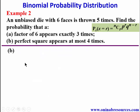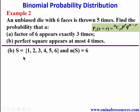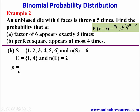For part b, the sample space is still {1, 2, 3, 4, 5, 6}. The perfect squares are {1, 4}, so n(E) = 2. The probability of success — getting a perfect square — is p = 2/6 = 1/3. The probability of failure is q = 1 − 1/3 = 2/3. Our n is still 5.